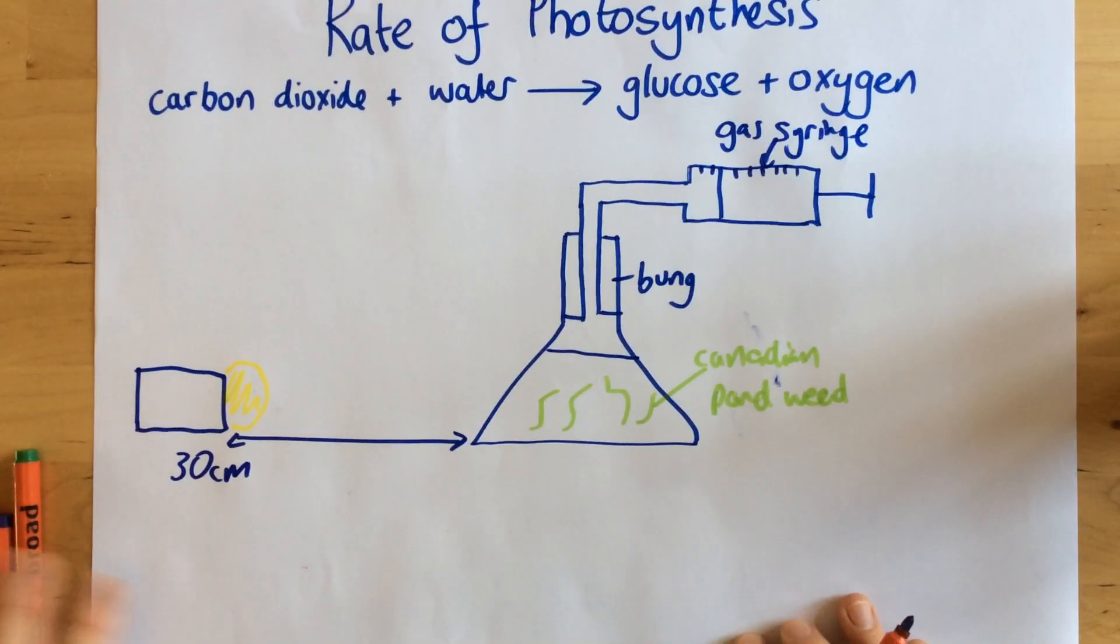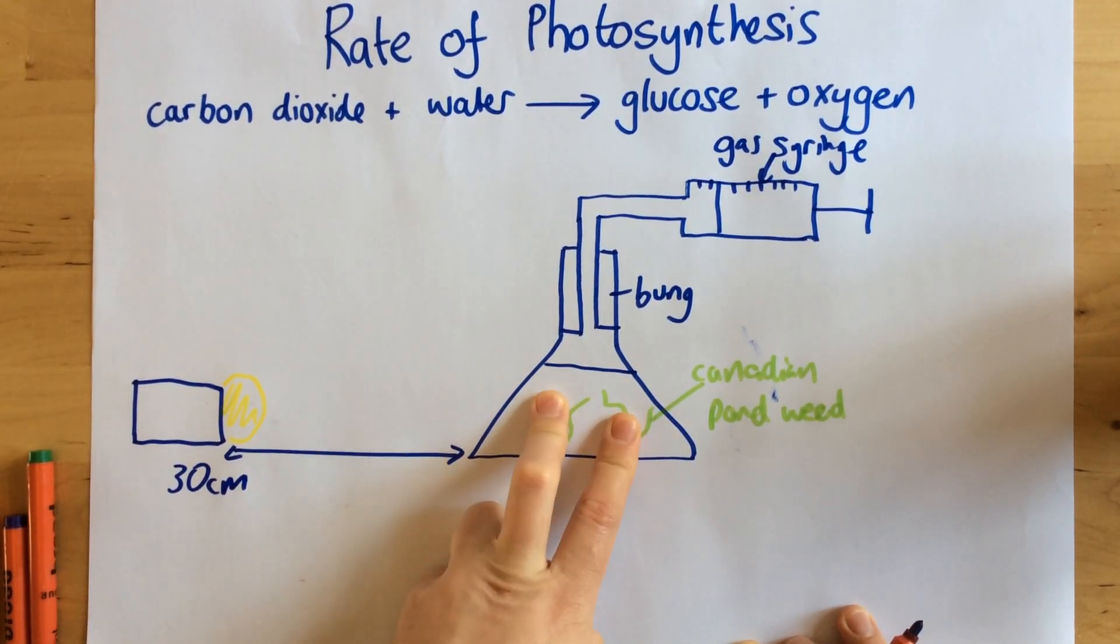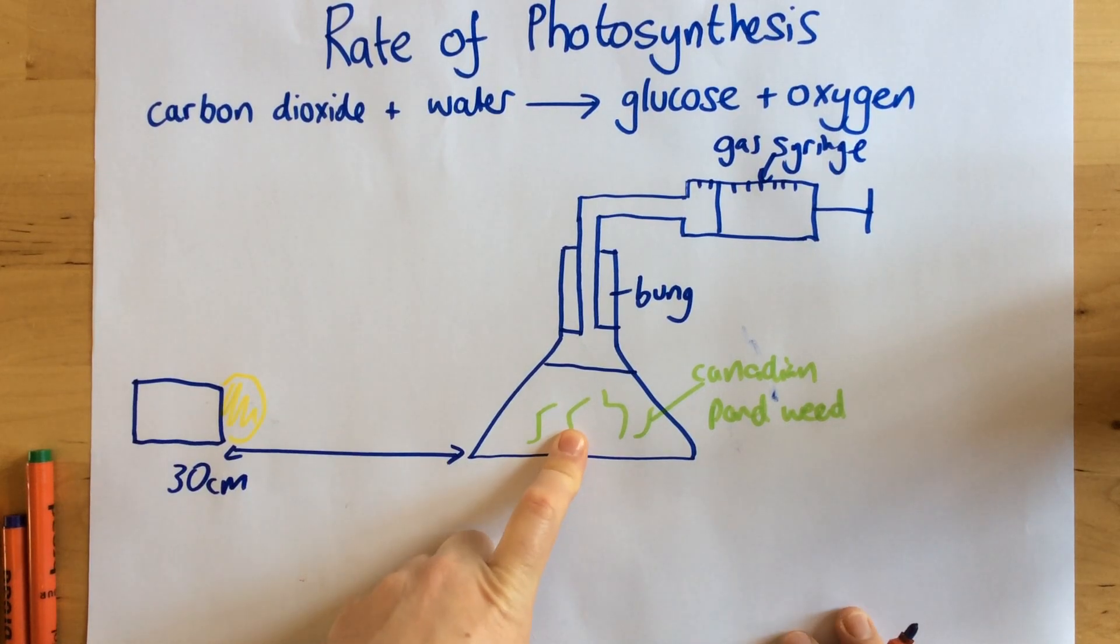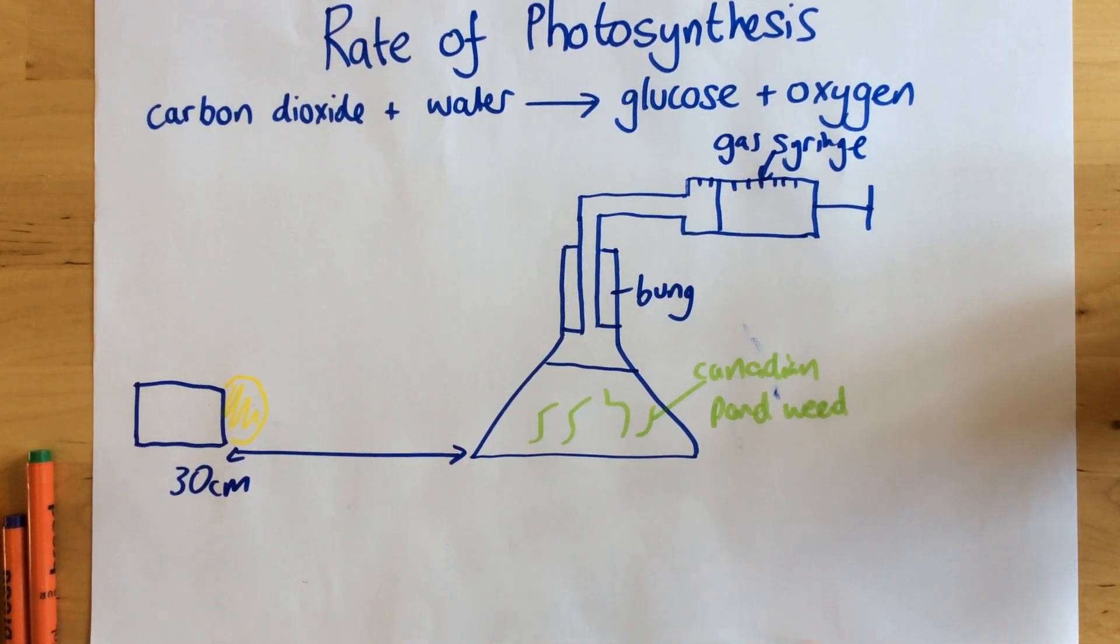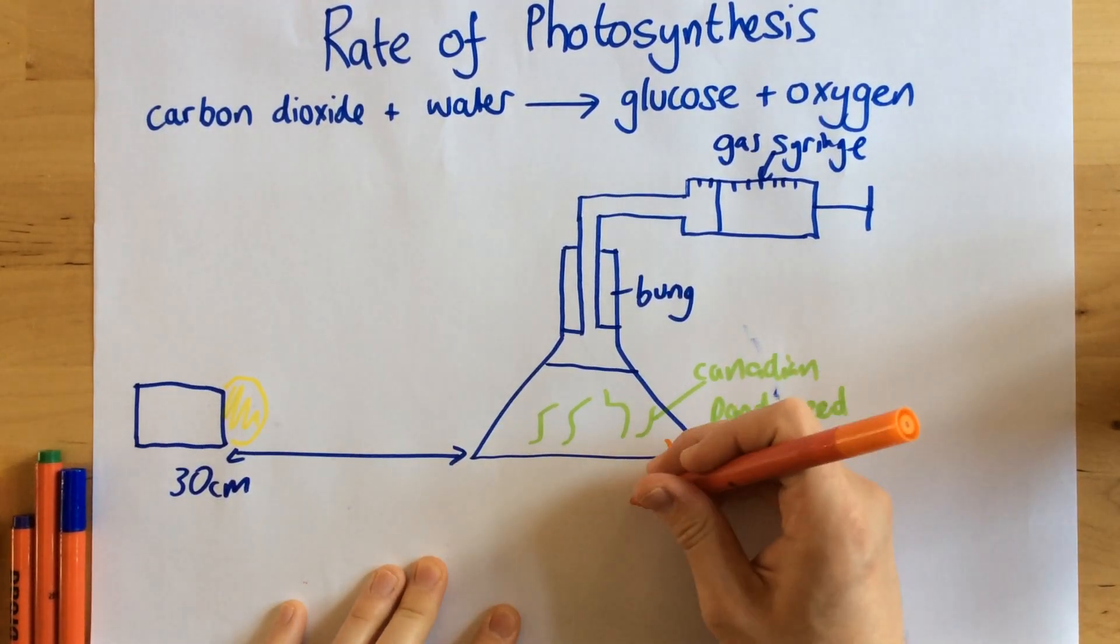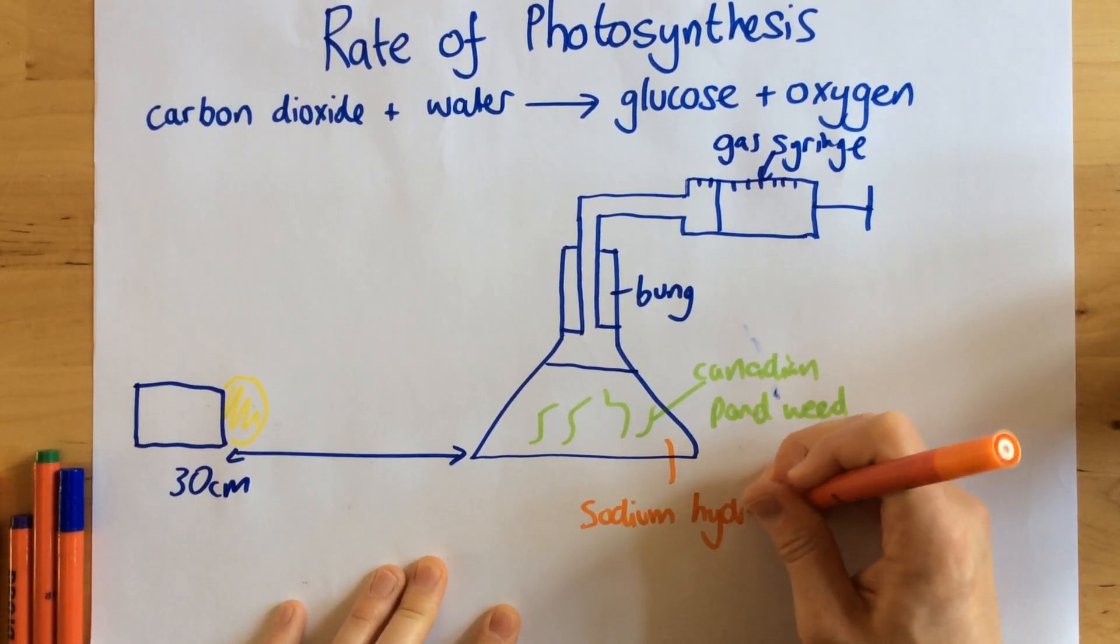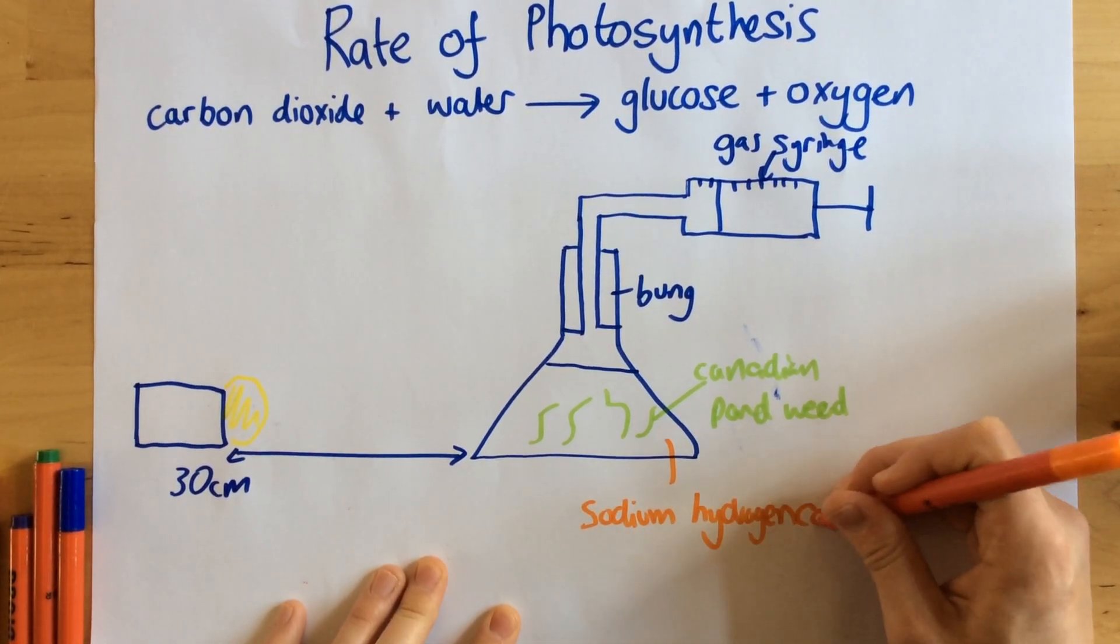Now what we have to do is this. We have to first leave the light here for a little while for it to acclimatize. And then after a little while, we're going to see how much oxygen is produced. But there's one other detail that I forgot to mention so far. In this water as well, we have a chemical called sodium hydrogen carbonate.